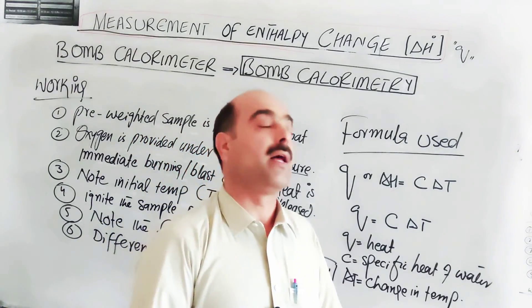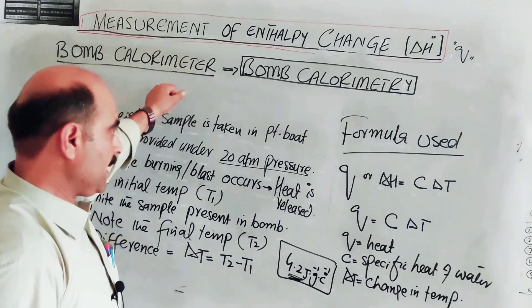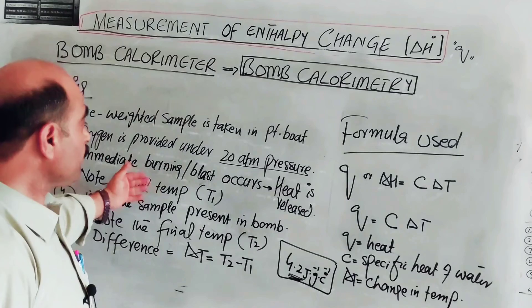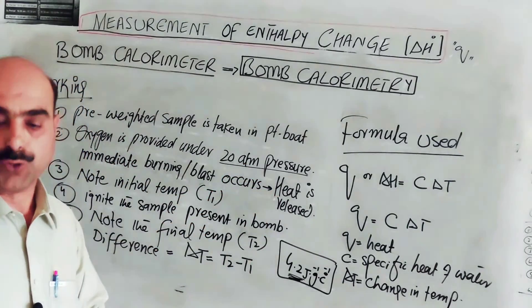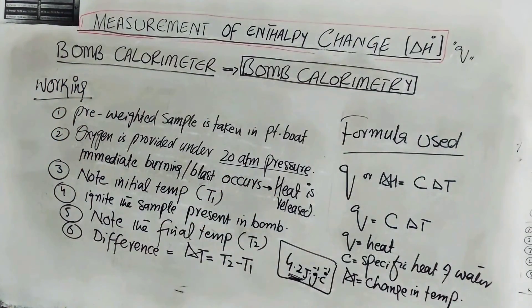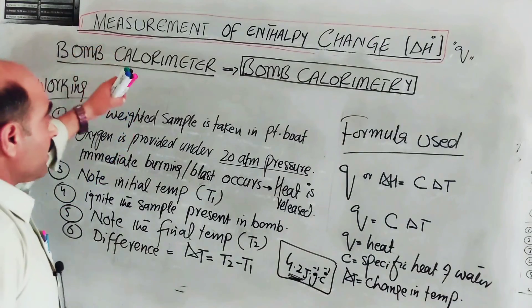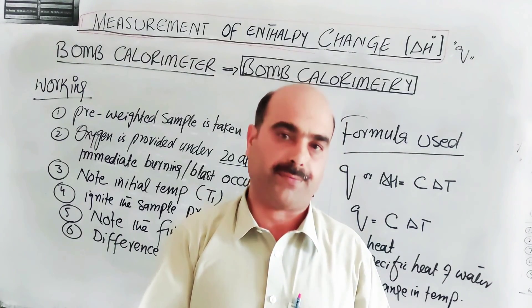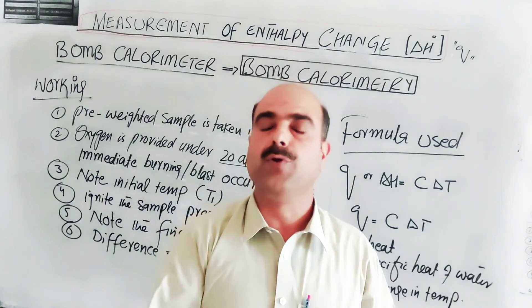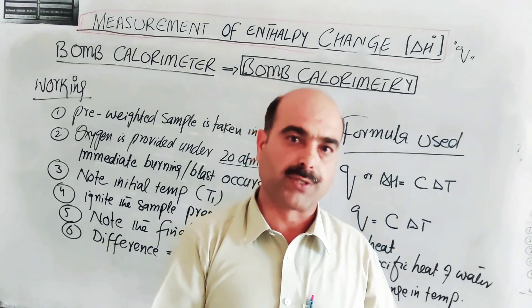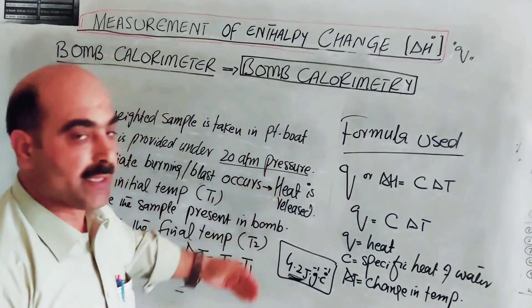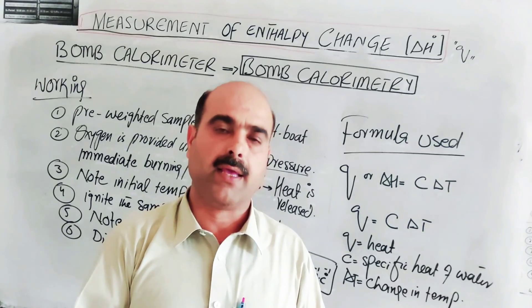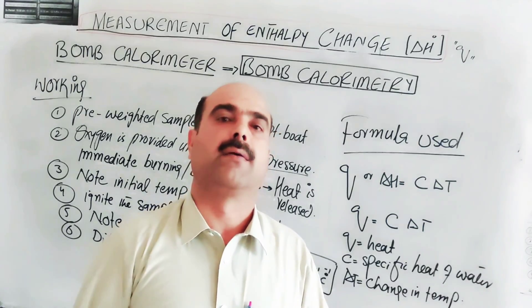So students, these were all about the bomb calorimeter — basic introduction, diagrammatic representation, construction, working, and formula used. Using the bomb calorimeter, we can find out the heat change or enthalpy change of food and fuel in industries. Thanks a lot for watching. Next topic — students, stay with us and thanks a lot for watching.